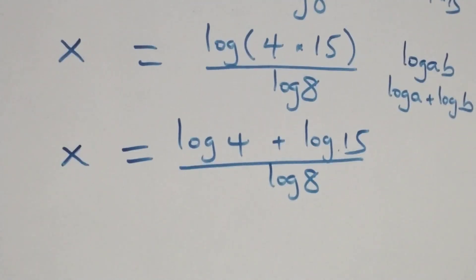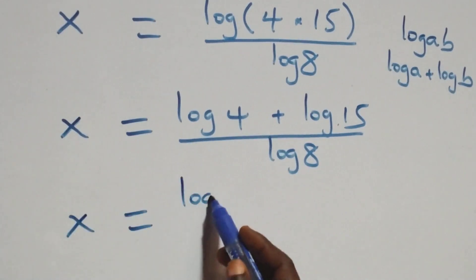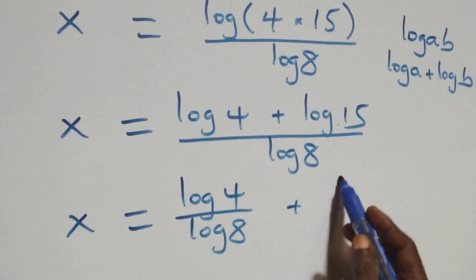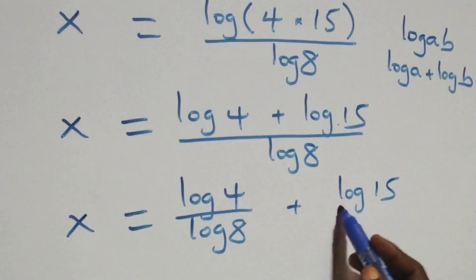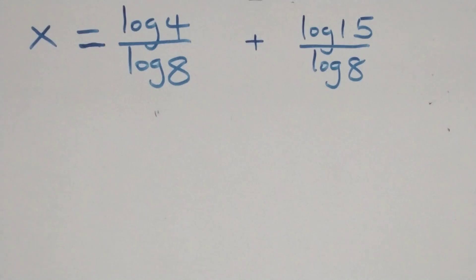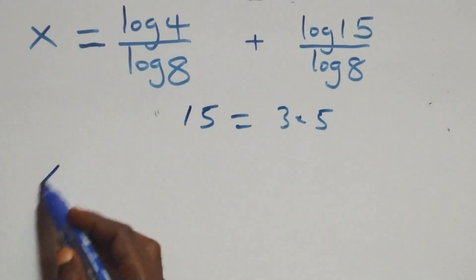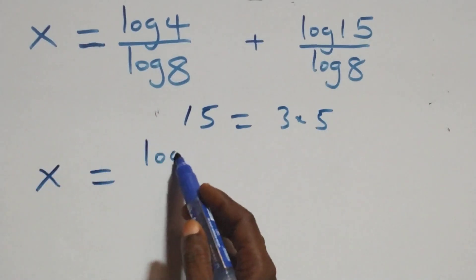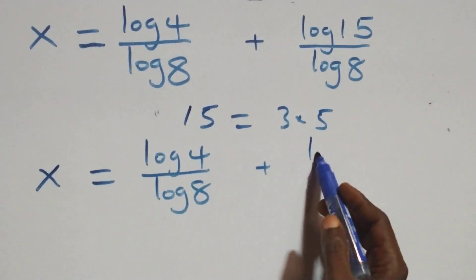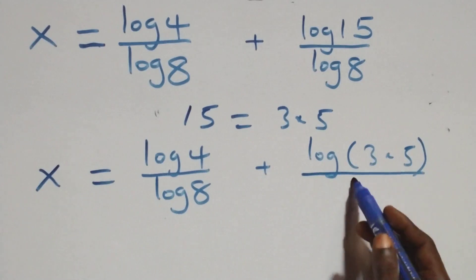Then next step, we have x equals to log 4 over log 8 plus log 15 over log 8. Next step, we can write 15 as 3 times 5. So this equation becomes x equals to log 4 over log 8 plus log(3 times 5) over log 8.